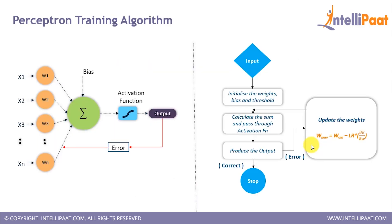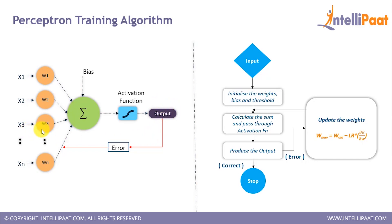Now let's understand the perceptron training algorithm. The perceptron receives multiple inputs, each initialized with a random weight. We multiply these weights with their corresponding inputs to get the sum, which is then passed through the activation function — giving a nonlinear output. This process is known as feed forwarding. If the output is not optimal, we calculate the error in prediction and go back to update the weights and bias — this is known as backpropagation. We keep backpropagating until we get the desired output.